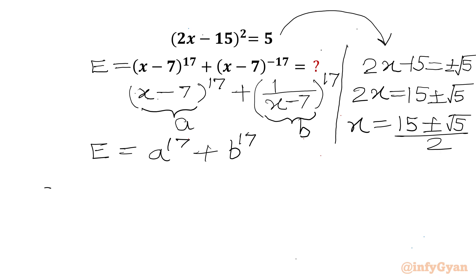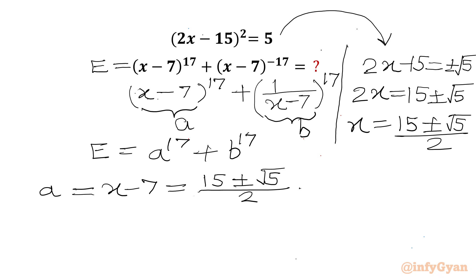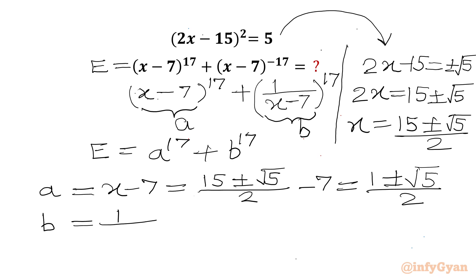Now I need to calculate A and B first. A = x - 7 = (15 ± √5)/2 - 7. Taking LCM, 15 - 14 = 1, so A = (1 ± √5)/2. And B = 1/(x - 7), which is the reciprocal of A: B = 2/(1 ± √5).